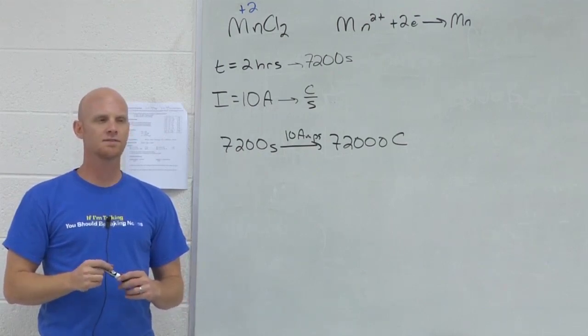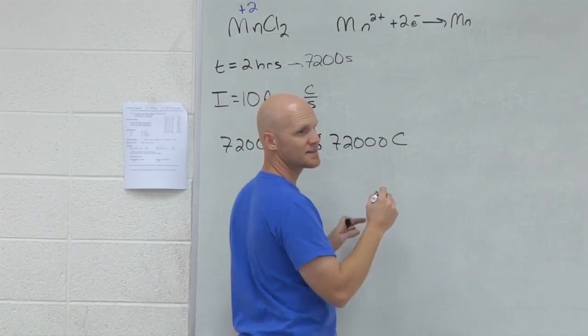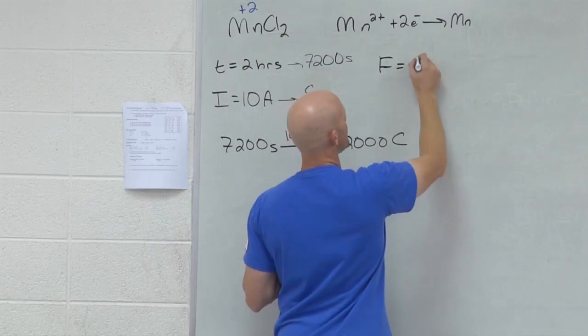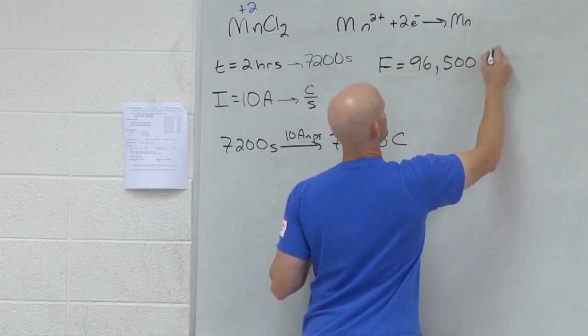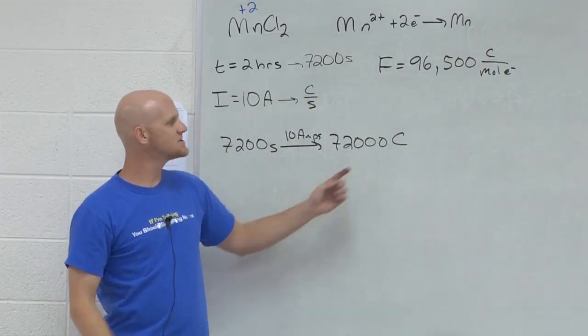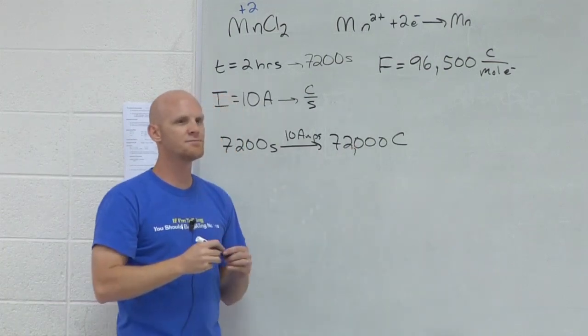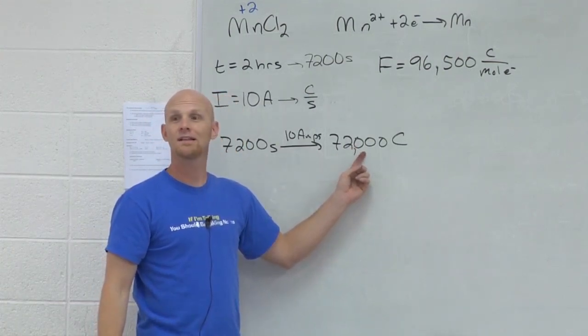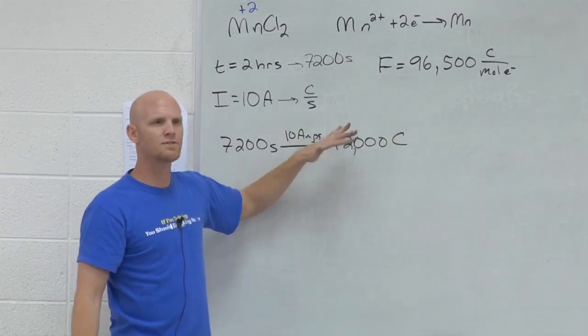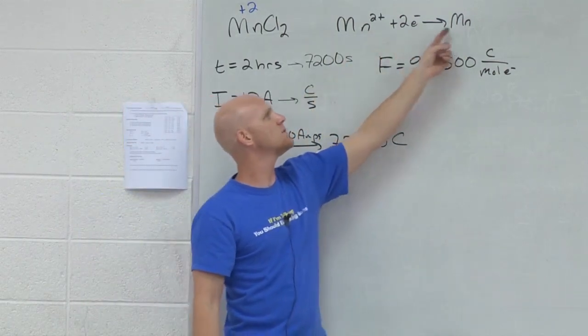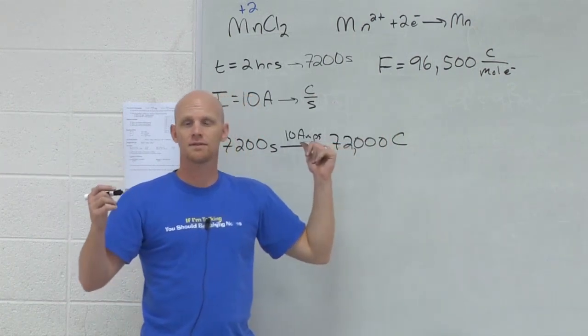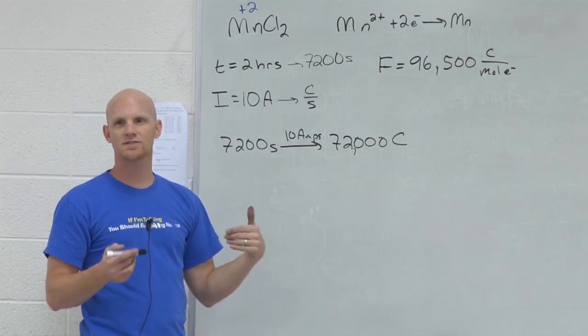What's the charge on one mole of electrons? If you recall, that's what Faraday's constant was for. It gave us the charge in coulombs per mole of electrons. So if we have 72,000 coulombs here, do we have more or less than one mole of electrons? Less. We have about two-thirds of a mole of electrons. With two-thirds of a mole of electrons, how many moles of manganese could we get? One-third of a mole.